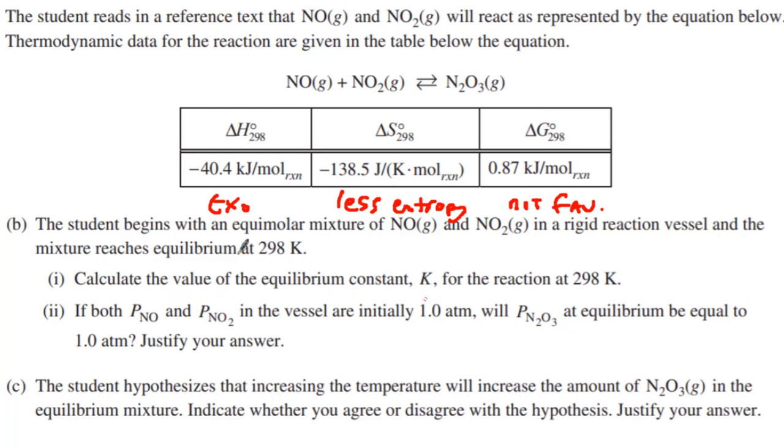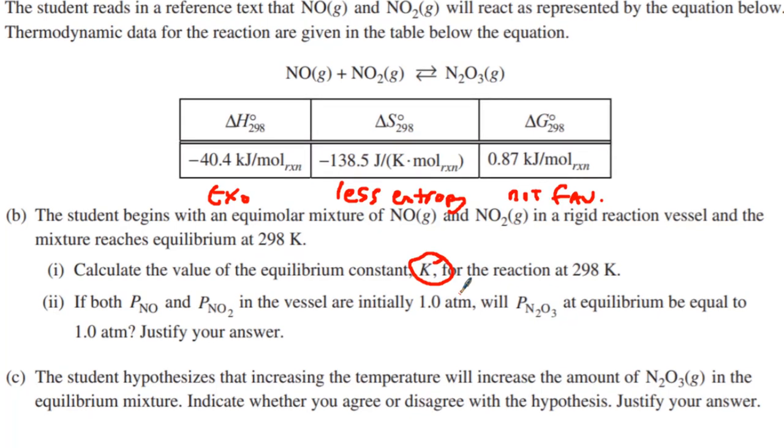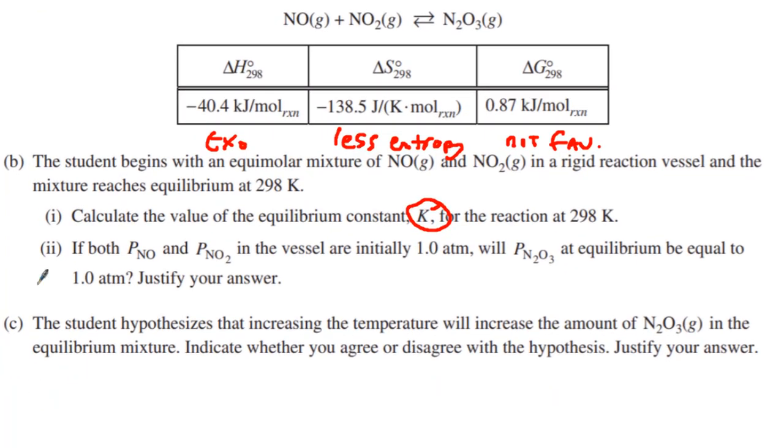Part B1 is asking to calculate the equilibrium constant K. We have the equation delta G equals negative RT natural log of K. We know our delta G is 0.87, or I need to change that into joules, so that's 870 joules per mole. Watch out for units on this. Negative R, we're going to use 8.314 joules per mole Kelvin to help our units.